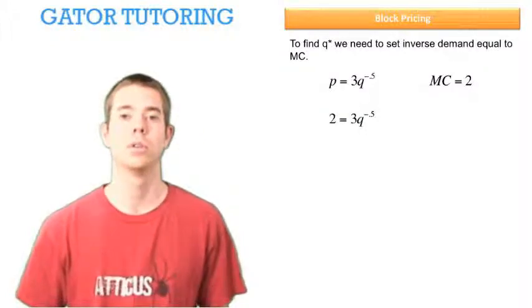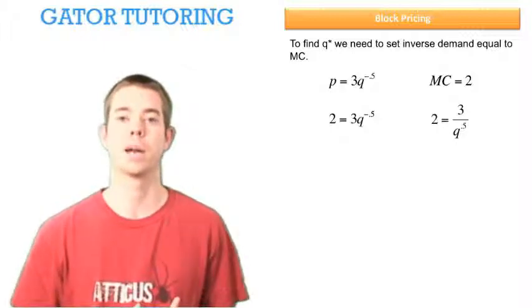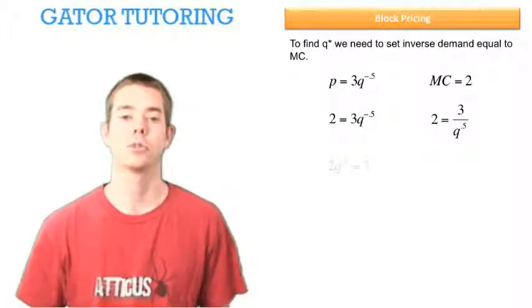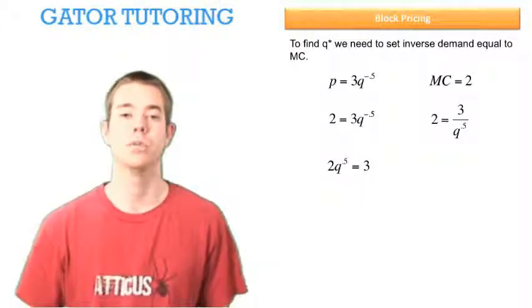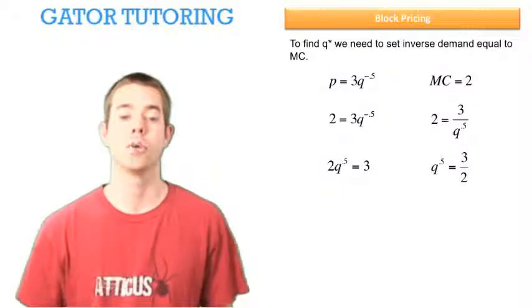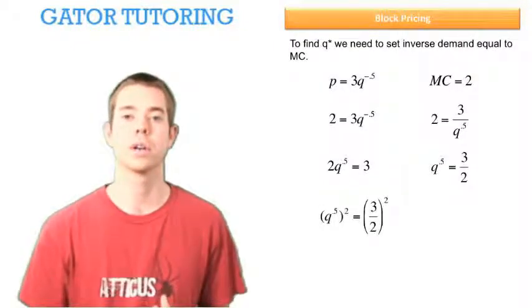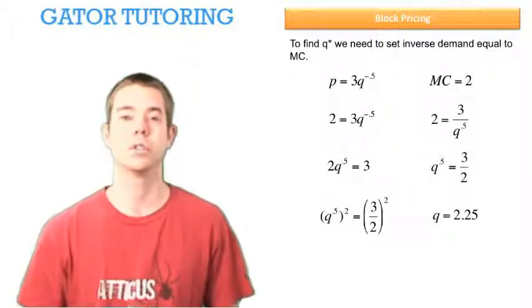When we set these two equal, we can do a little bit of algebra and solve. First let's rearrange this to where the negative exponent is on the bottom of the fraction, and then cross multiply to get that out of the denominator. Now, dividing everything through by 2, we find that the square root of Q is equal to 3 halves. So we can square both sides to get rid of the square root of Q. And when we do this, we find that quantity is equal to 2.25.